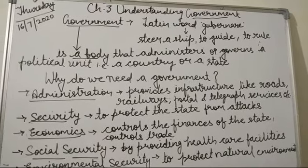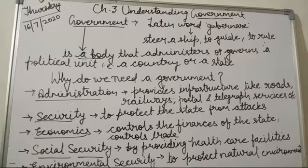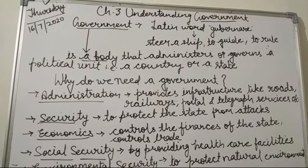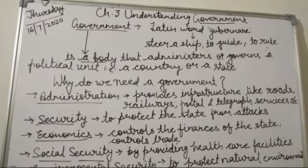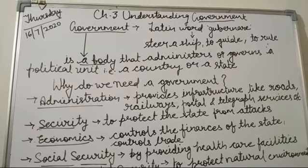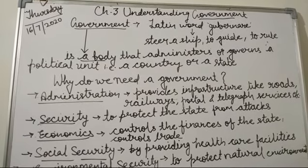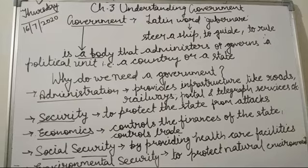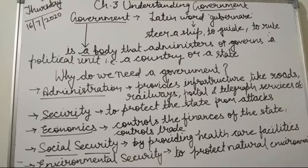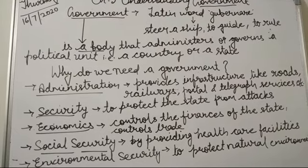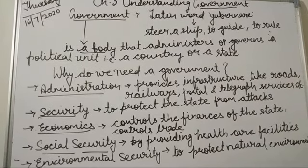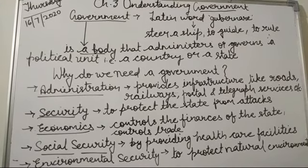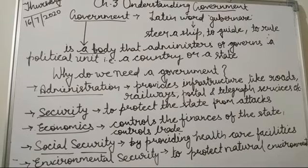In a modern day government, there are certain functions which a government has to fulfill, without which we cannot imagine democracy. The first is administration — the government manages the day-to-day affairs of the country and provides basic infrastructure like roads, railways, postal and telegraph services, public transport, street lighting, and public facilities like parks and libraries. It also maintains relations with other nations.